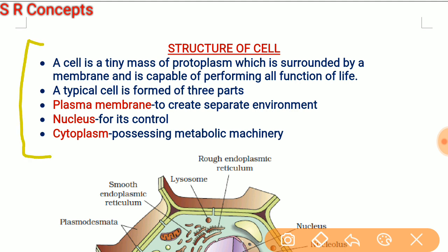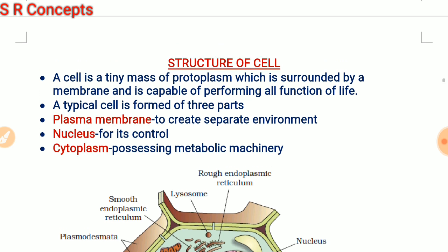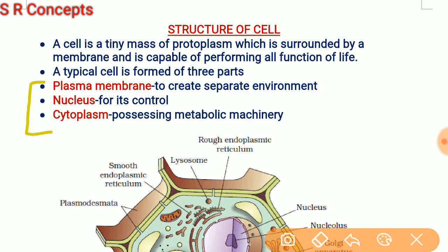The first important point is: a cell is a tiny mass of protoplasm which is surrounded by a membrane and is capable of performing all functions of life. In every cell on this earth, three structures are very important and present in almost every cell — the first is plasma membrane, the second is nucleus, and the third is cytoplasm. We will be understanding these in detail.